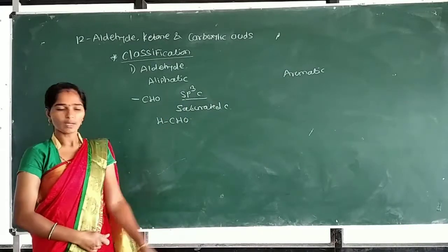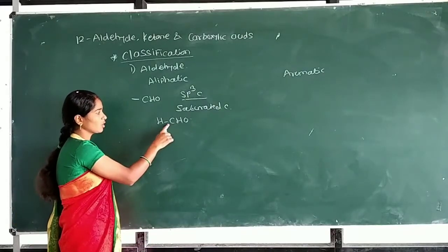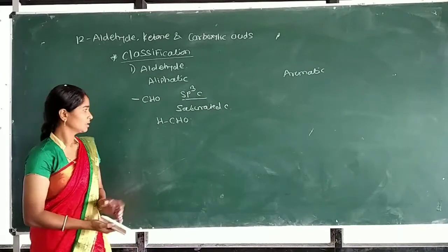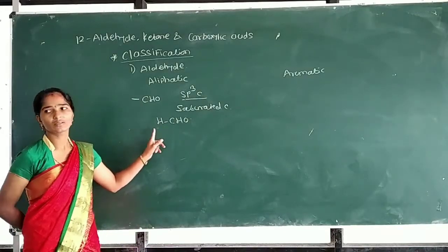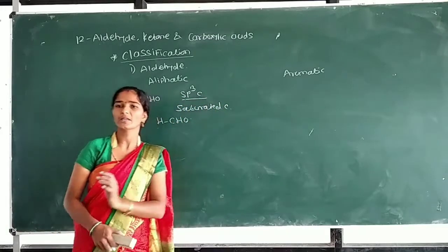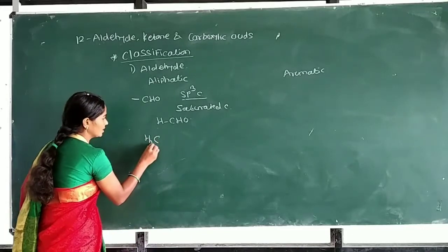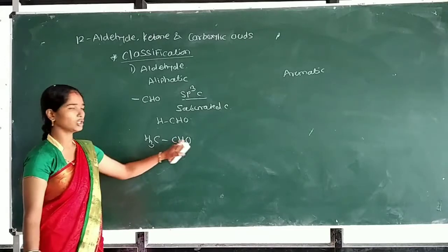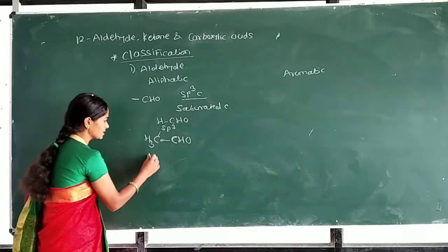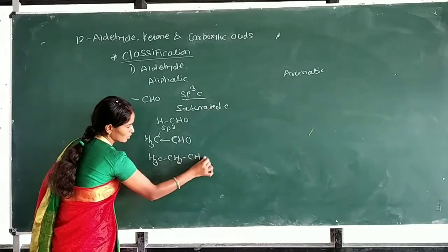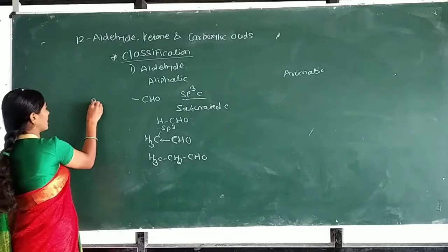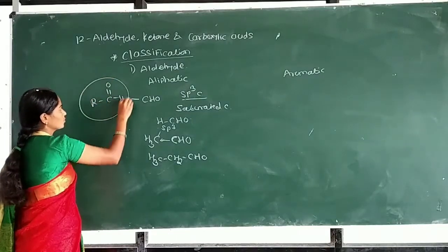In aliphatic aldehydes, formaldehyde (HCHO) is an exceptional case because its formyl group is not attached to an sp3-hybridized carbon — it is attached directly to hydrogen. In other aliphatic aldehydes, the formyl group is attached to an sp3-hybridized carbon. For example, CH3CHO and CH3CH2CHO are examples of aliphatic aldehydes. The functional group of aliphatic aldehydes is R-CHO.